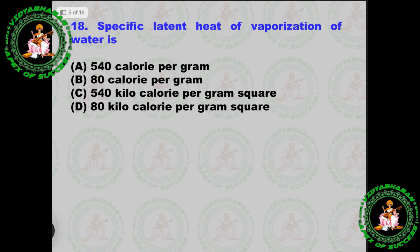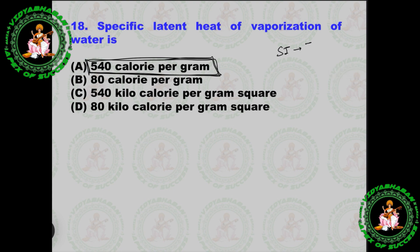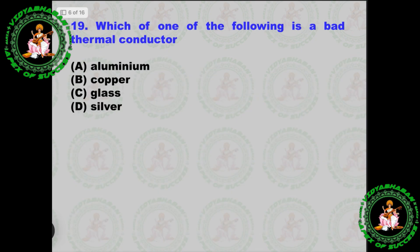Next question: What is the specific latent heat of vaporization of water? The answer is 540 calories per gram. The SI unit is joules per kilogram and the CGS unit is calories per gram. So the answer is 540 calories per gram.